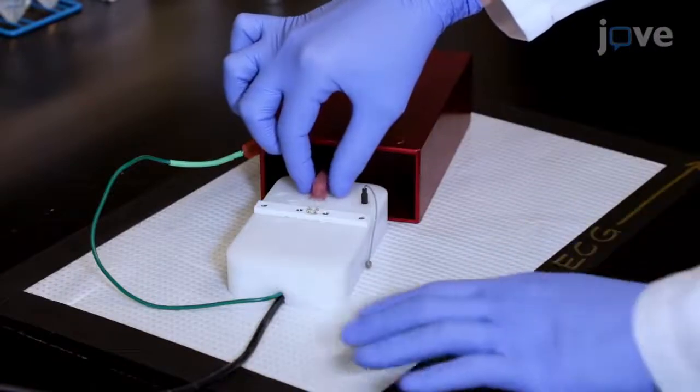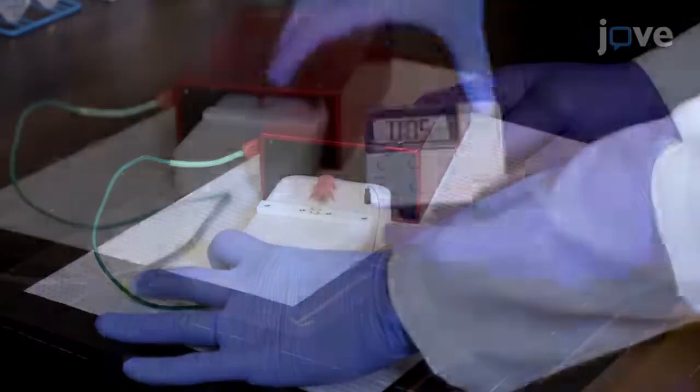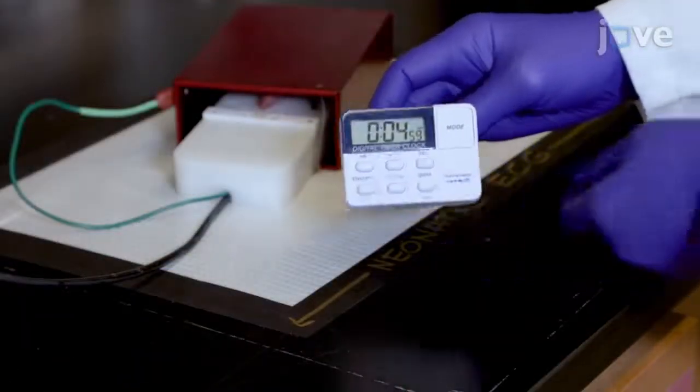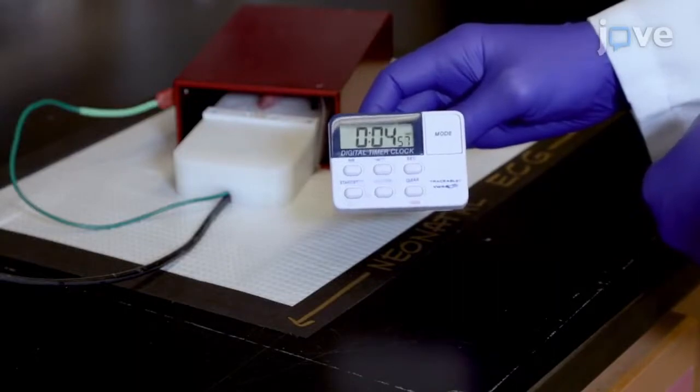Place the pup on the heated surface of the platform and allow the animal to acclimate to the surface for approximately 2 to 5 minutes in the dark.